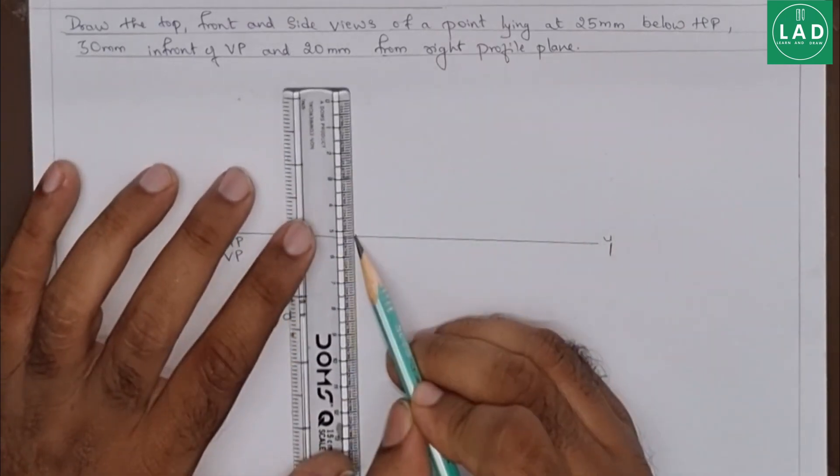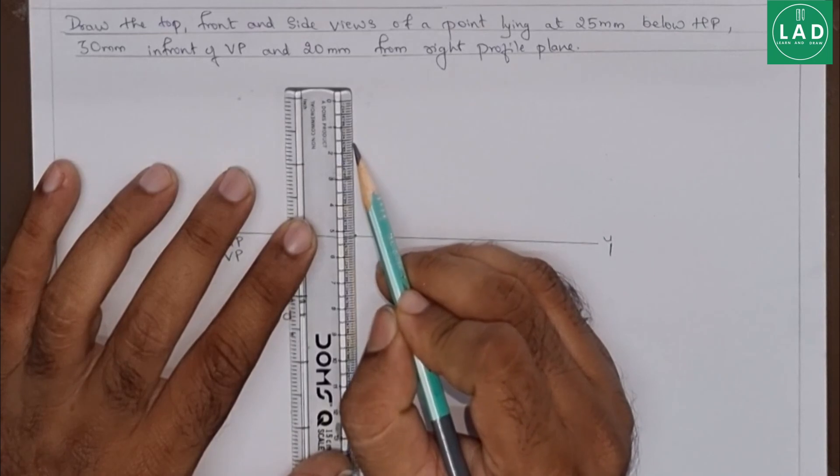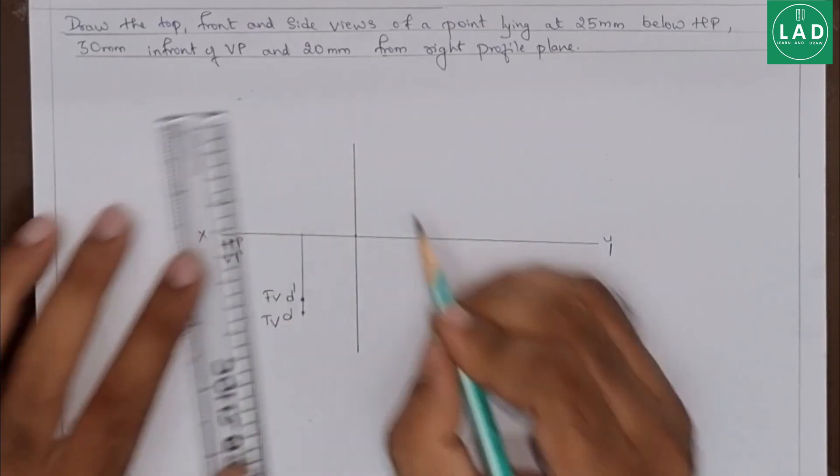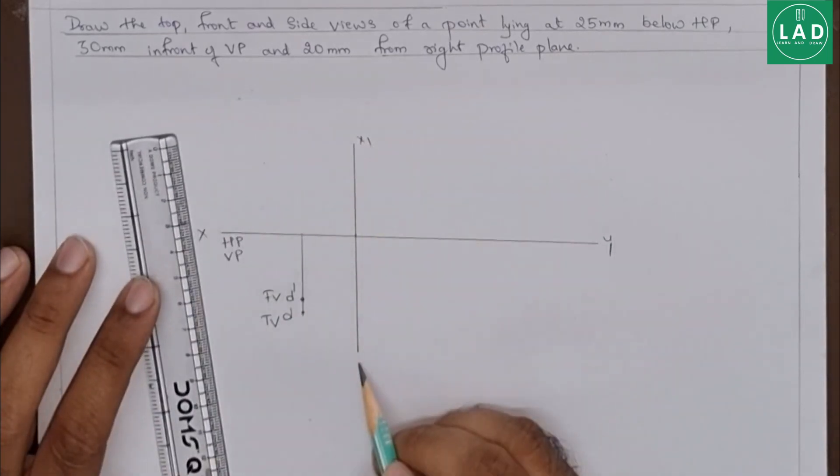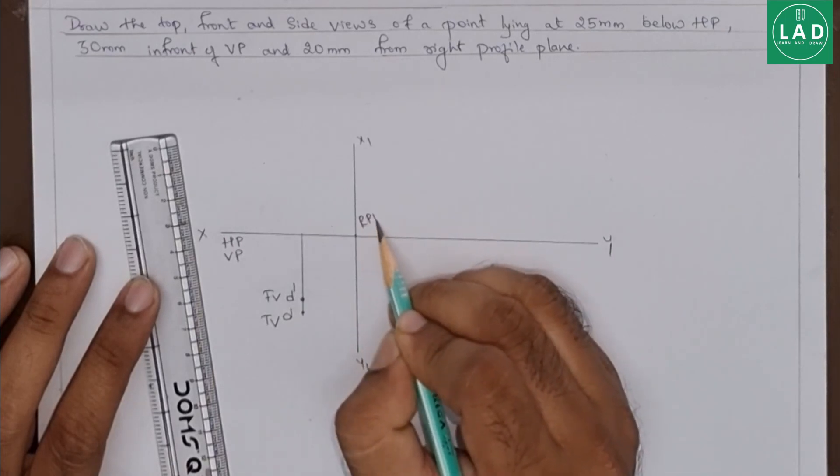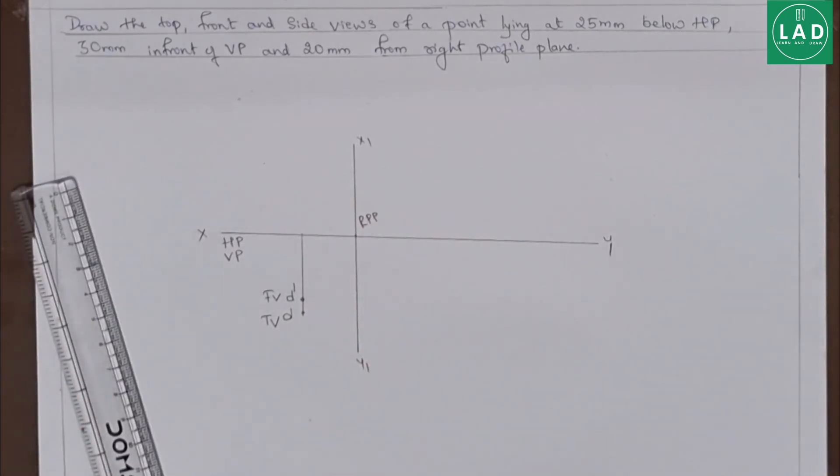From here, we have to draw the right profile plane. This is X1, Y1, RPP that is right profile plane.